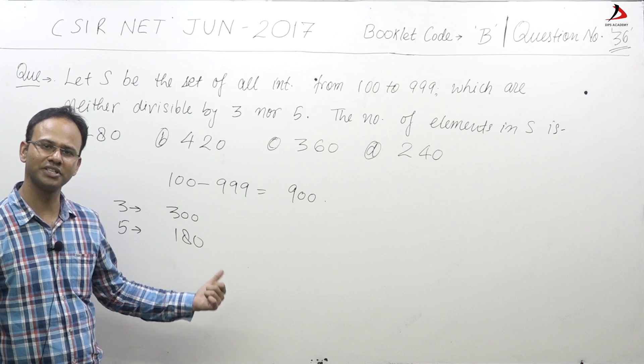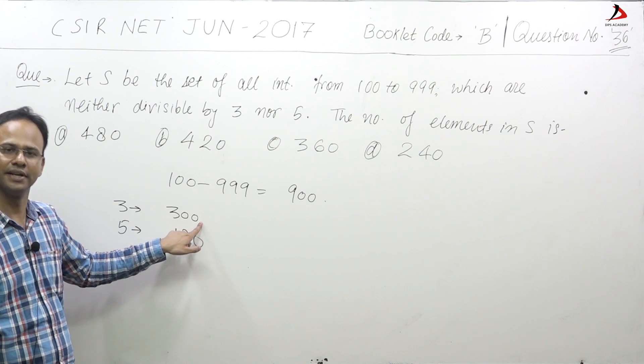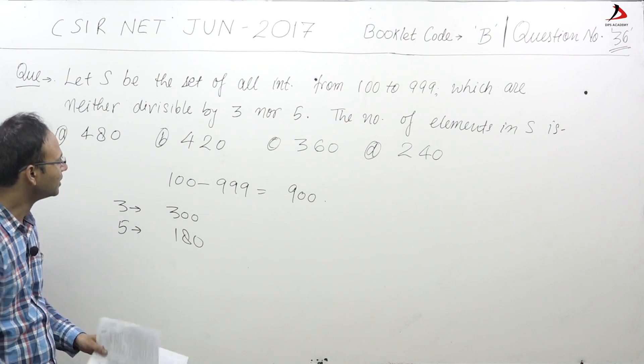Now, the multiples of 15, which is the LCM of 3 and 5, have been calculated here as well as here. So you need to subtract those numbers.